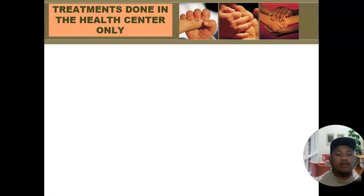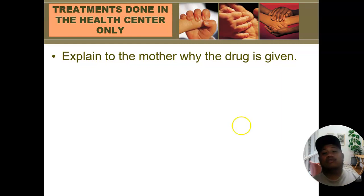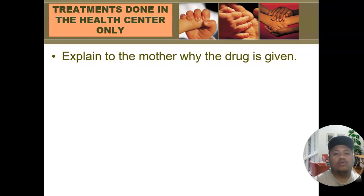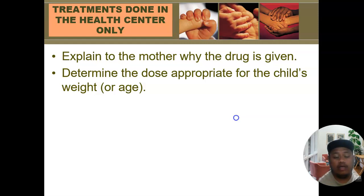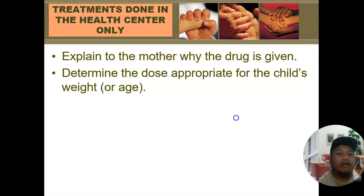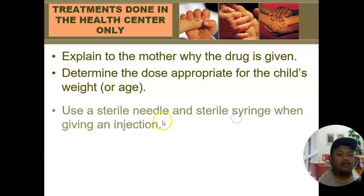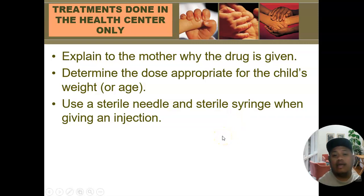Guideline number one: explain to the mother why the drug is given. If we don't inform them, they may question or refuse the interventions. Next, get the child's age and weight to compute the appropriate antibiotic or diazepam dose. We base dosing more on weight than age, because a child's weight may not be appropriate for their age and drug effect is based on body surface area. Use sterile needles when giving intramuscular injections to prevent sepsis or infections, and measure the dose accurately.